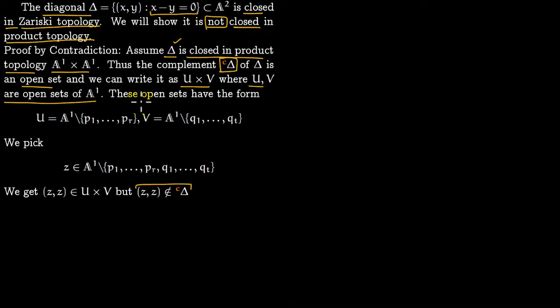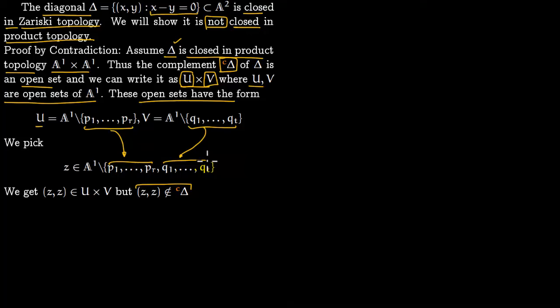Recall that open sets of A1 have the form A1 minus a finite set of points. So the open set U in A1 has this form with r points missing, and the open set V in A1 has this form with t points missing. You can take those r points and t points out from A1 and then pick z from what remains. This z gives a point (z, z) lying in U times V, producing the contradiction.